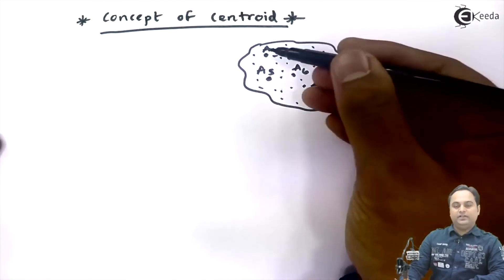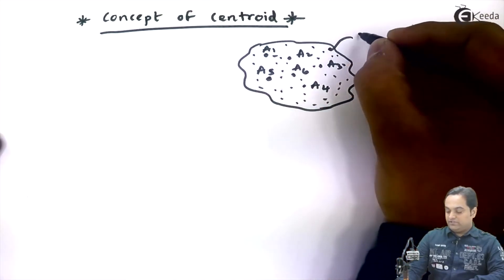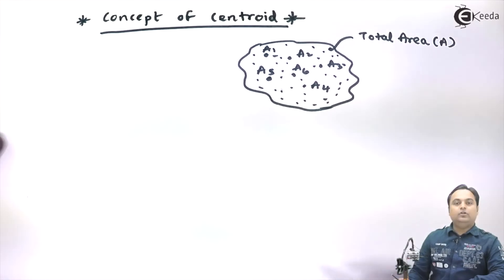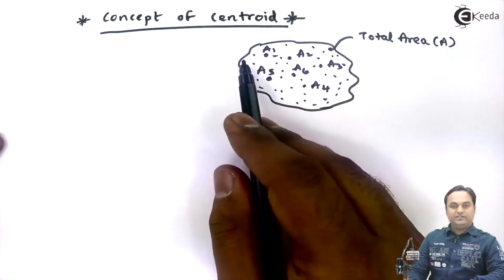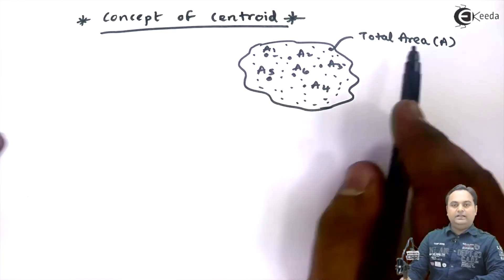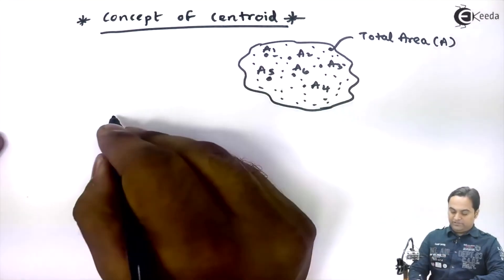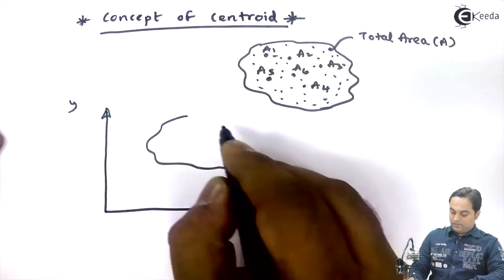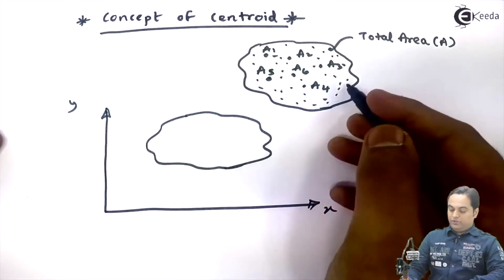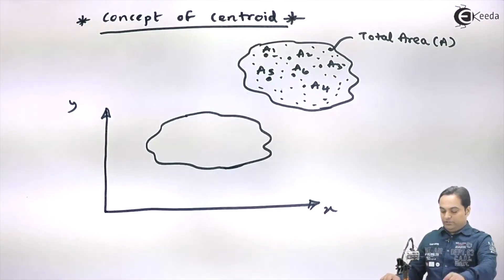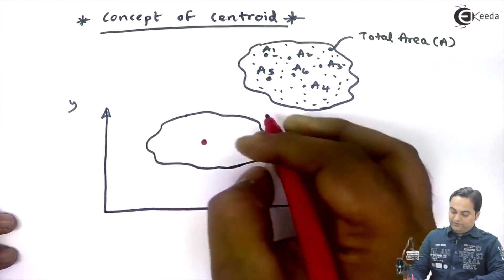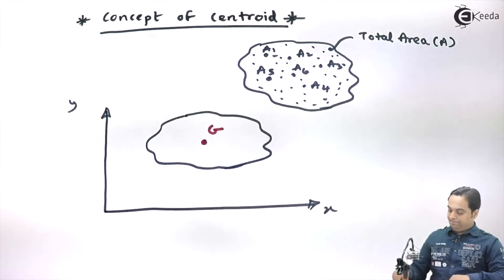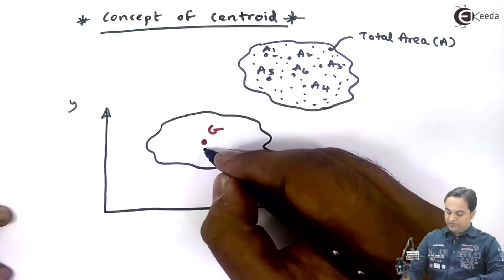Now these small small areas will give us the total area which is denoted by capital A. Now instead of having individual areas, if I want to denote the total area at that single point, that single point would be called as the centroid.